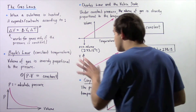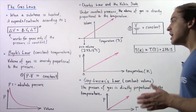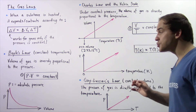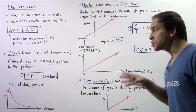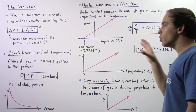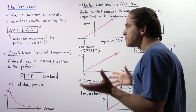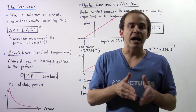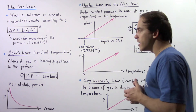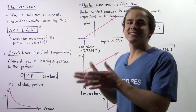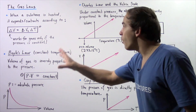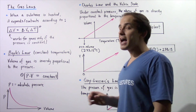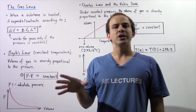Actually, these three laws aren't really laws — they're more of approximations. They don't hold if our pressure is very high and temperature is low, because under those conditions the gas will transition into a liquid or even a solid state. So Boyle's Law, Charles' Law, and Gay-Lussac's Law only hold as long as our pressure isn't too high and the temperature isn't too low.